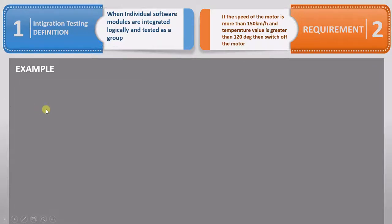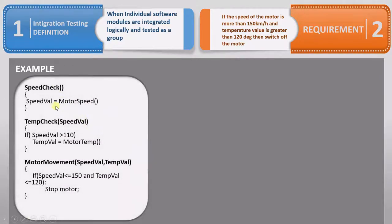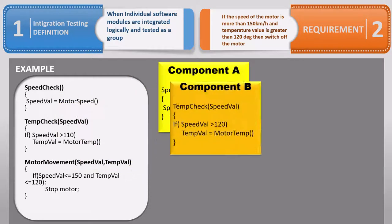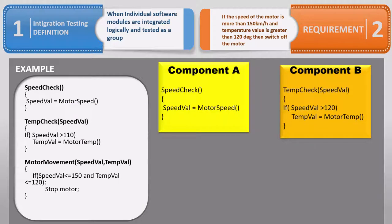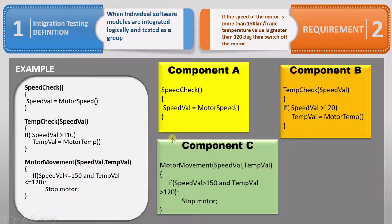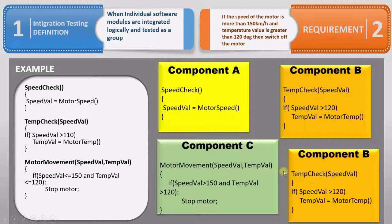Now let's say the developer has written this code for the requirement and we want to perform integration testing on it. We already know that to perform component testing, we have to take each of these functions and test them separately. For integration testing, we have to take at least two components like A and B and test them together. What we are checking here is if the value of speed in A is rising, is the value of temperature in B also rising? This shows us the interaction between the two modules. We can also perform this test on components C and B. Just remember that you have to take at minimum two units to perform this test. At maximum you can take all three components together.